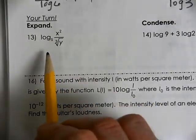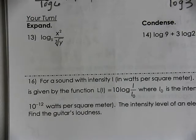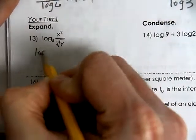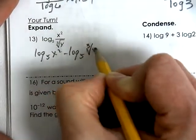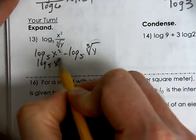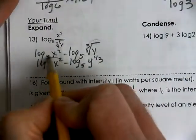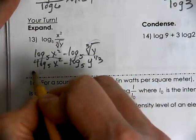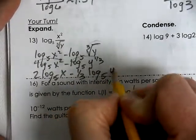Now it's your turn — pause the video and work through expanding, condensing, and evaluating. For expanding log base 5 of (x² / ∛y): the cube root can be written as y to the one-third power. Bringing both exponents in front gives 2 log base 5 of x minus one-third log base 5 of y.